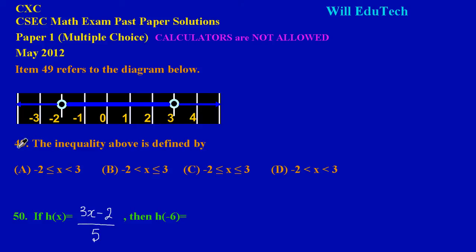Now question 49: the inequality above is defined by, and here they have given us some compound inequalities to choose from, options A, B, C, and D. So we are supposed to choose the best option that is representing the information on our number line.